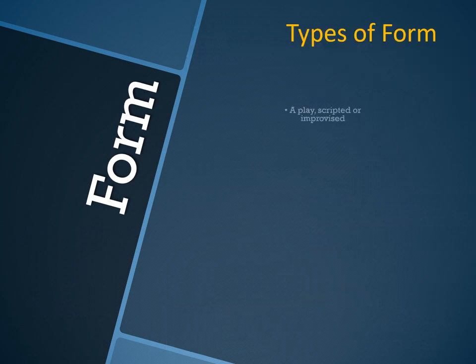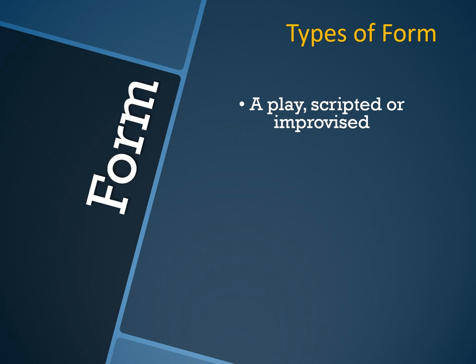Types of forms: a play can be scripted or improvised. In a scripted play, the script contains the characters, events, set, props, and everything related to that play. In improvisation, there is no script — the actors use their talent to improvise something on the stage according to the situation.